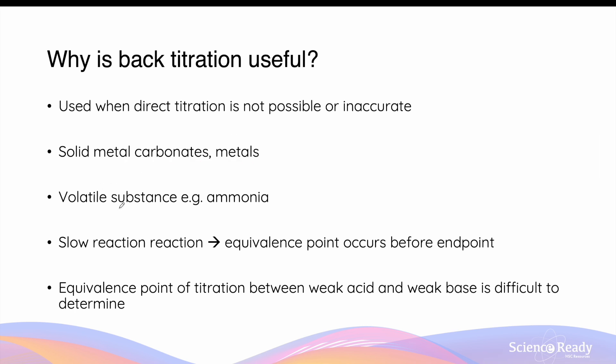Another example whereby normal titration is not possible is in the case where volatile substances, that is substances that can evaporate very easily, such as ammonia, are being used. In normal titration, if you have a substance that will evaporate very easily, you can imagine you won't be able to yield accurate results, as you'll be losing some of the products during the titration.